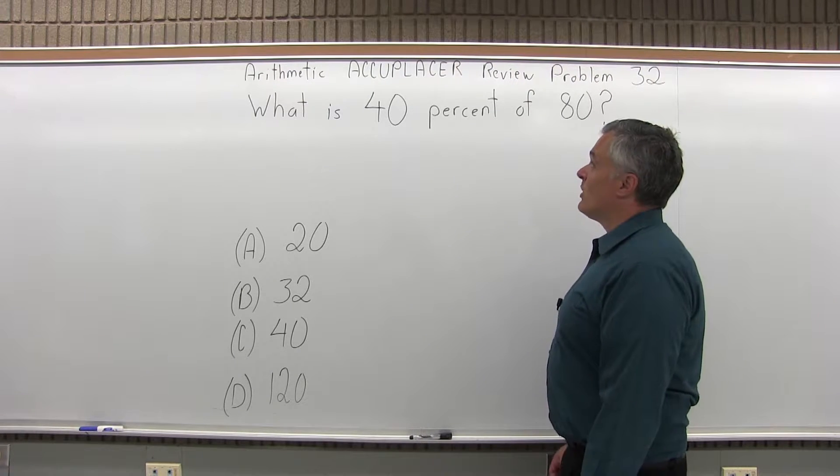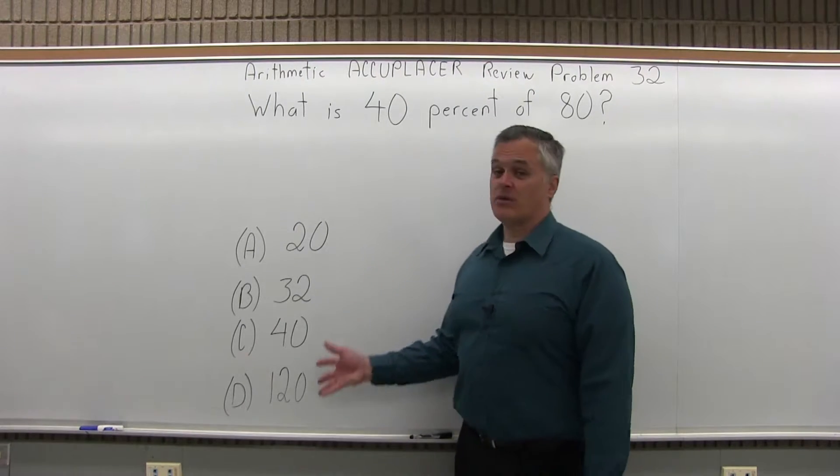It asks, what is 40% of 80? And then we have four options to choose from.